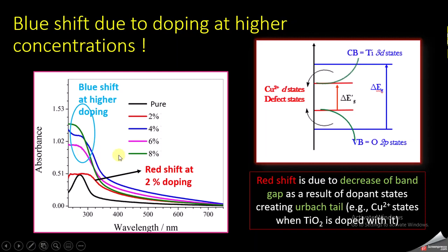After increasing the dopant concentration from 2% to 4%, 6%, and 8%, you can see that the peak shifts back towards lower wavelengths. This shift in the backward direction is called a blue shift, and it occurs at higher dopant concentrations.